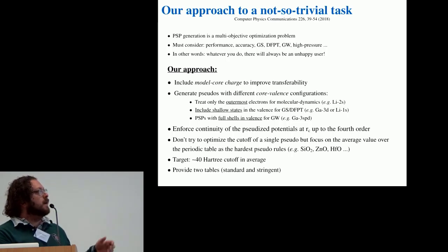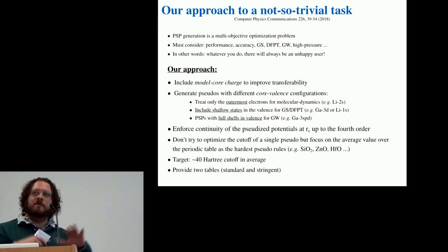So we decided to target a 40 Hartree cutoff on average over the periodic table, and this makes sense also if you start to run a high-throughput calculation in which you can have multiple elements inside your system.